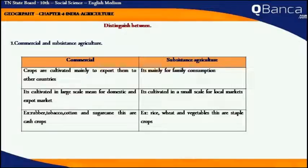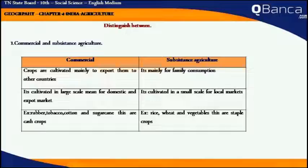Commercial and subsistence agriculture. Commercial agriculture crops are cultivated mainly to export them to other countries. Subsistence agriculture crops are cultivated mainly for family consumption. Commercial agriculture crops are cultivated on a large scale meant for domestic and export market, while subsistence agriculture crops are cultivated on a small scale for local market.